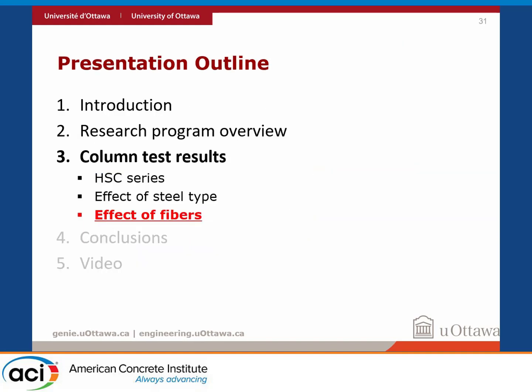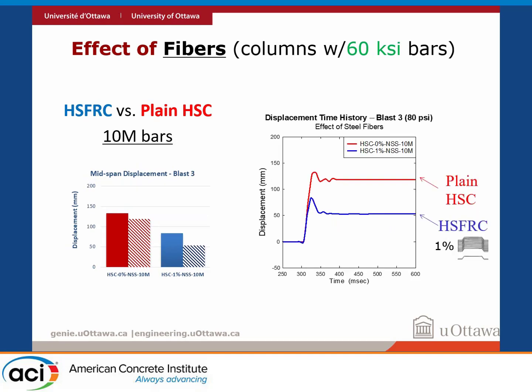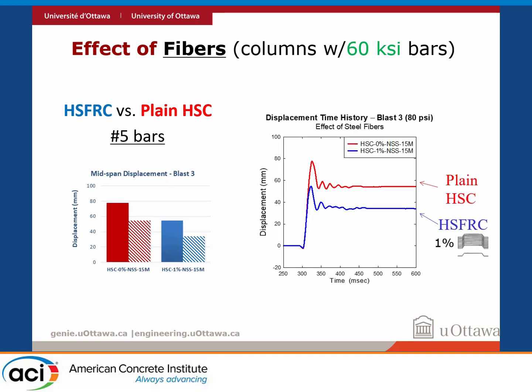The last parameter we looked at is the effect of fibers. Consistently, adding fibers improves performance. Comparing a plain HSC column to a fiber-reinforced concrete column with 1% fibers, you see reduced maximum and residual displacement at moderate blast intensity. More importantly, when the column fails — the plain HSC column disintegrates with very large maximum and residual displacement — whereas the fiber-reinforced concrete column also fails, but in a much more controlled manner with less damage at failure. We saw this consistently across 10M, No. 4, and No. 5 bar sizes.